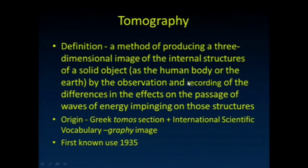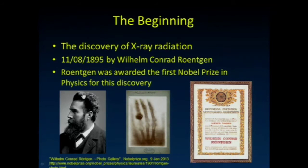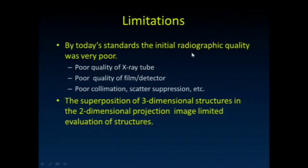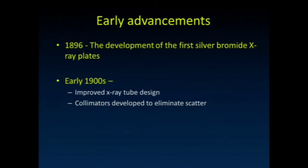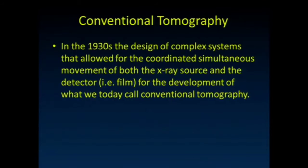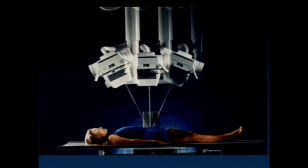Tomography literally means slice imaging. The idea is to go from planar x-rays to slice-type images — what we talk about with CT. The limitations of early images included poor quality x-ray tubes, poor quality film, and no good collimation or scatter suppression. Even after those things improved, you still had the issue that on a planar radiograph, 3D structures are all superimposed into a 2D image.